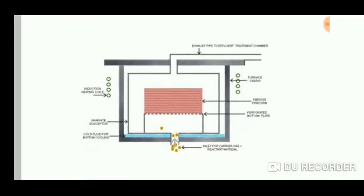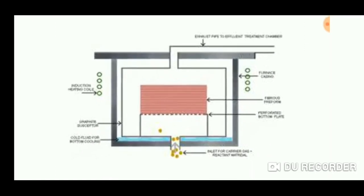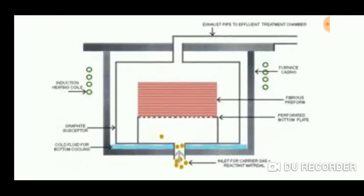This is another diagram showing the same process: a container containing a preform, where the vapor enters from the bottom and in the hot region it settles inside the preform, while the remaining gases exit from the top surface.